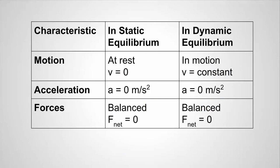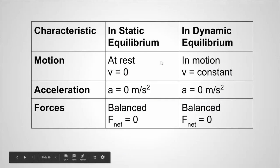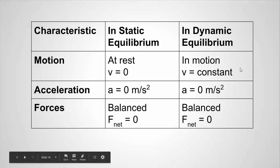To summarize: in static equilibrium, the object is at rest, its velocity is zero, its acceleration is zero, the forces are balanced, and the net force is zero. In dynamic equilibrium, everything is the same except the object is in motion — its velocity is not zero but is constant. Like static equilibrium, acceleration is zero, the forces are balanced, and the net force is zero.